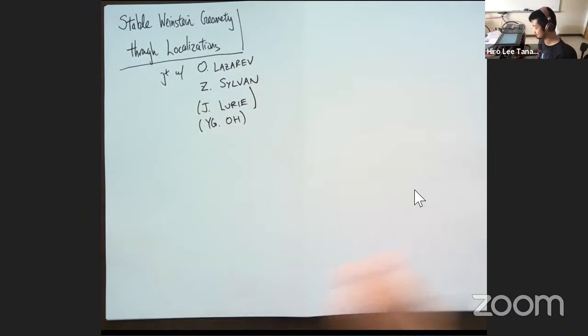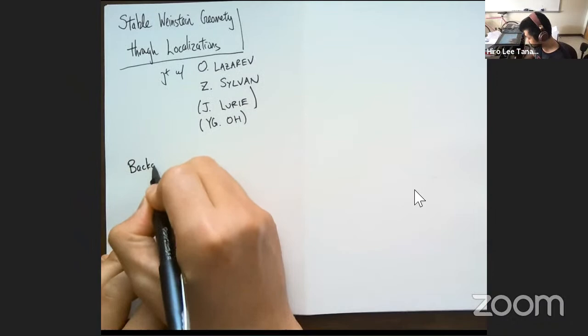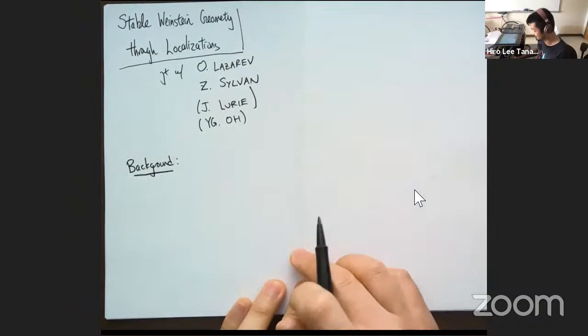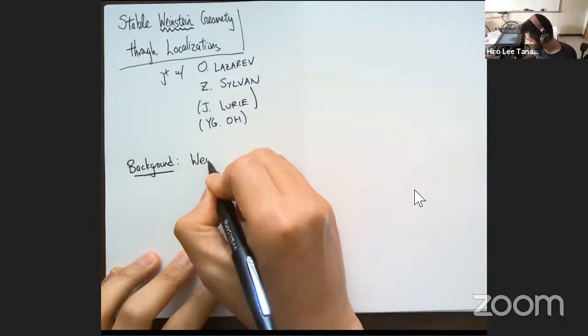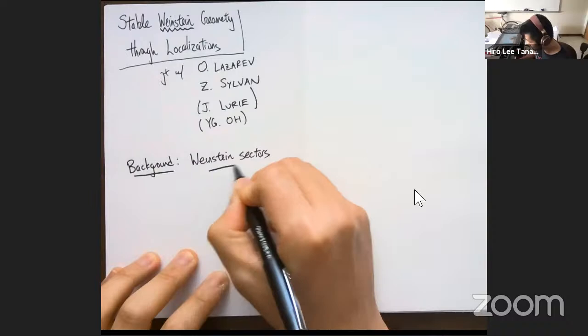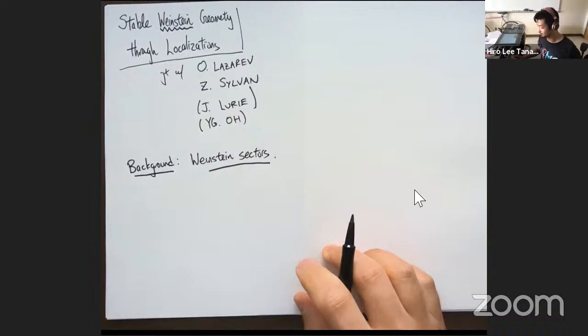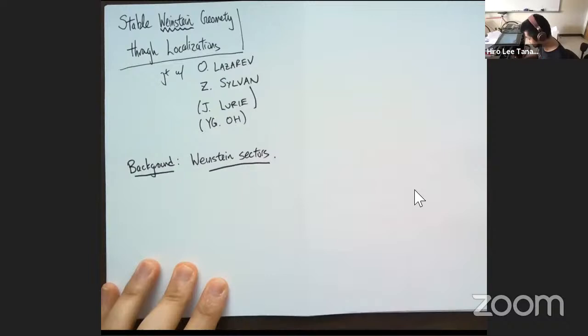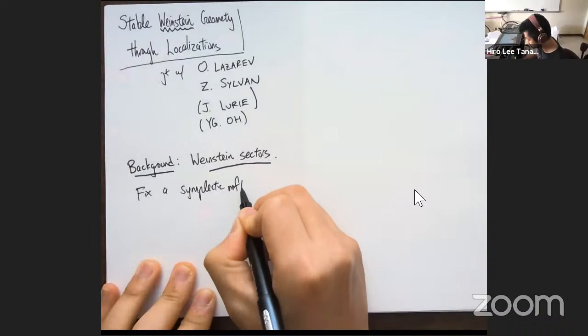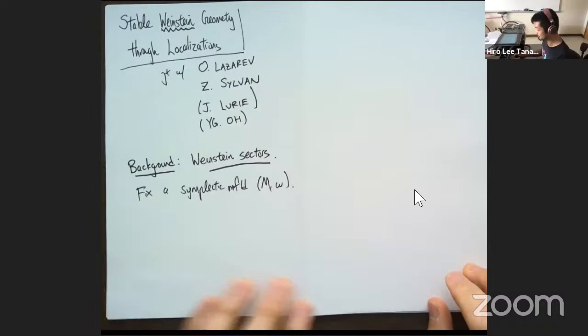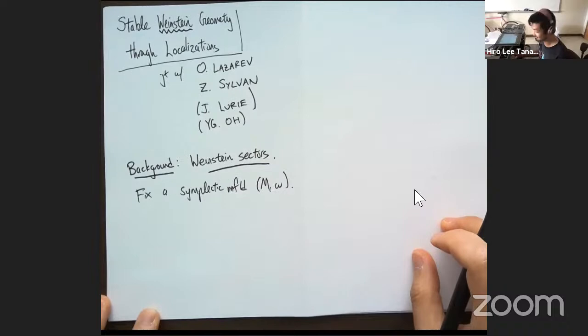Let me start off with some background. Whenever I give a talk, I want to make sure if you didn't know one thing, what's the one thing that you ought to take away? I just want to make sure that I mention it, which is just the word Weinstein in the title. So what is a Weinstein sector? A lot of this talk is going to be about Weinstein sectors. So roughly speaking, it's a kind of symplectic manifold. Let's fix a symplectic manifold, capital M with a symplectic form omega.